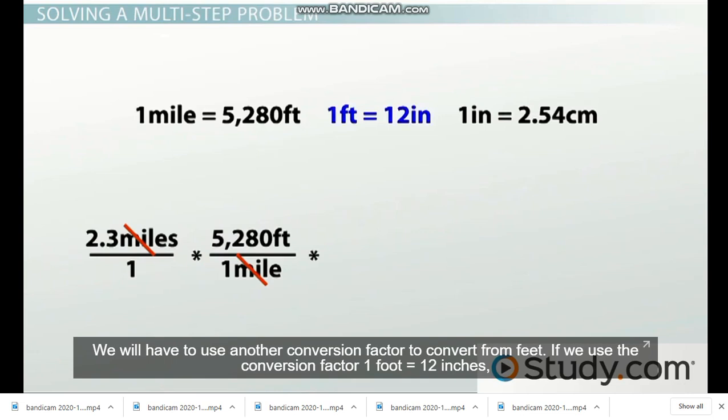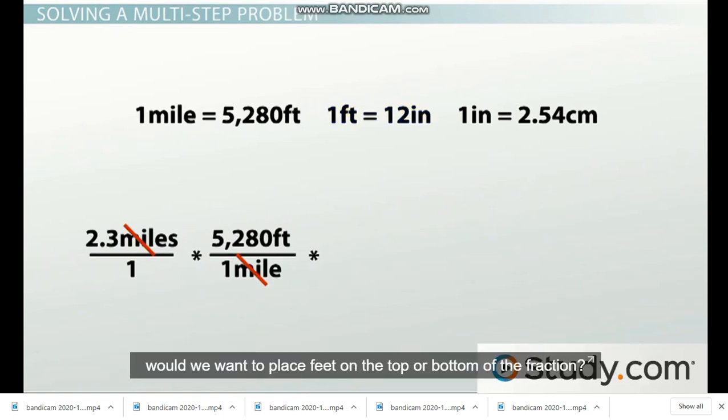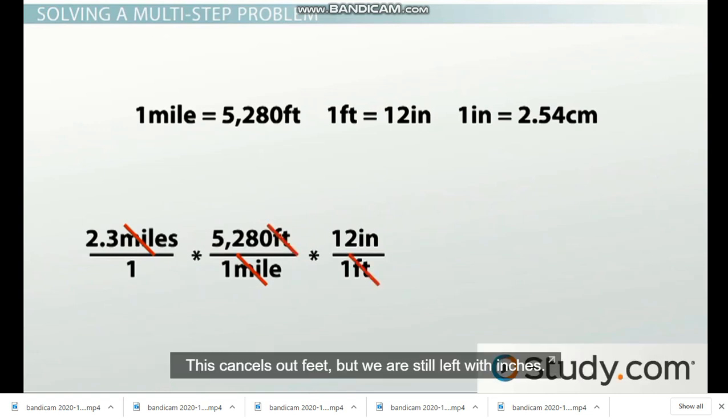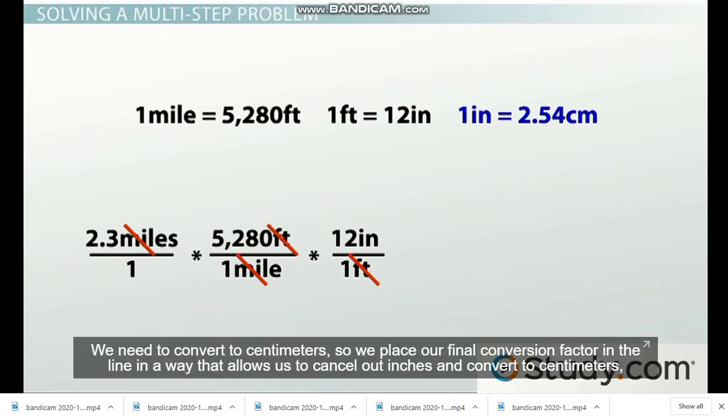We will have to use another conversion factor to convert from feet. If we use the conversion factor 1 foot equals 12 inches, would we want to place feet on the top or on the bottom of the fraction? In this situation, we would place it on the bottom. So we would multiply by 12 inches over 1 foot. This cancels out feet, but we are still left in inches.